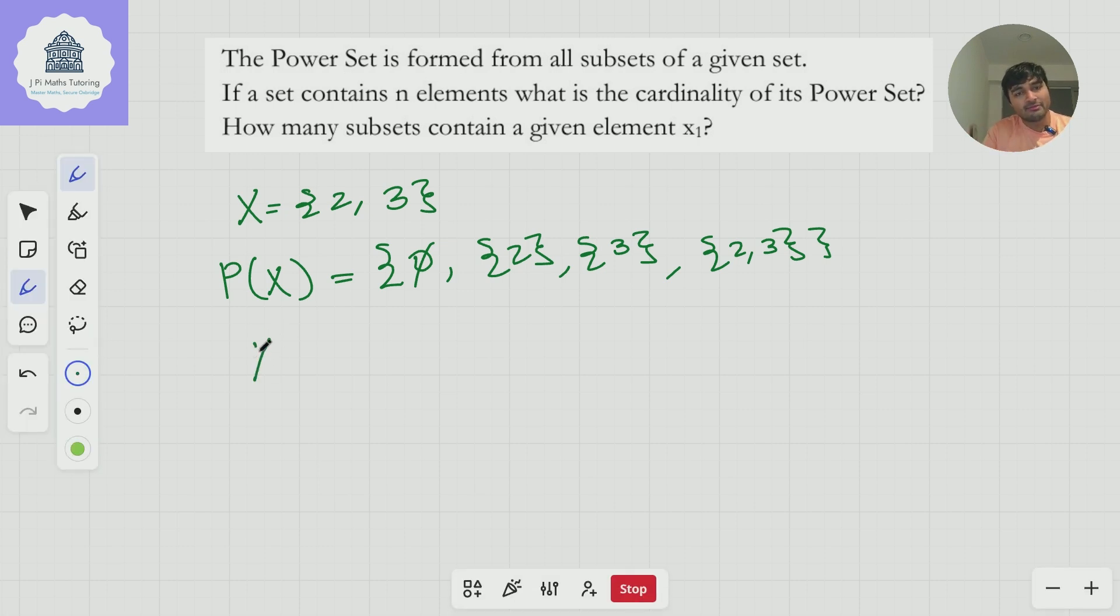For example, if I started with X, I'll call it X0 if it has zero elements in. So that would just be, well, the empty set. And how many subsets does this have? Well, the P of X0 here that would just contain the empty set. The only subset of the empty set is the empty set. And so this would have one element in. Would I be correct in saying that? And the interviewer would say, yeah, that's fine. Okay, lovely, cool.